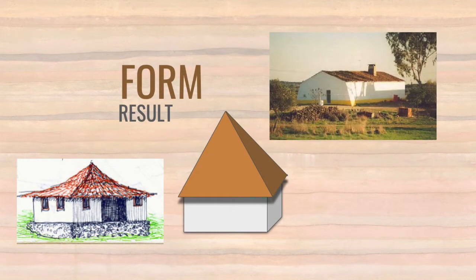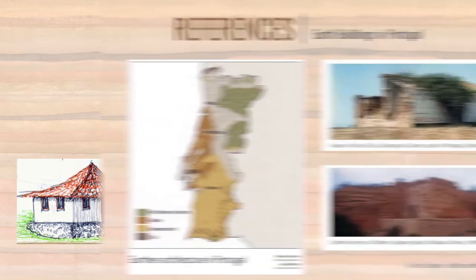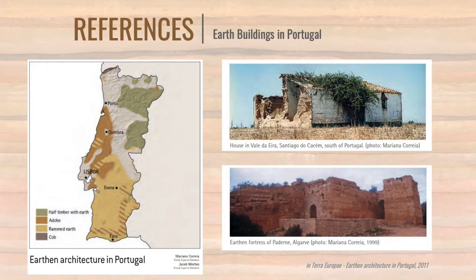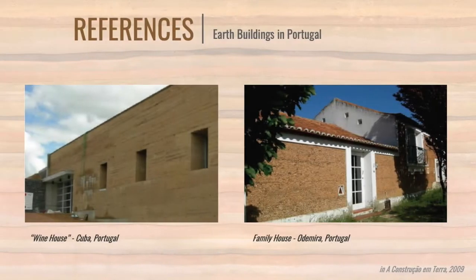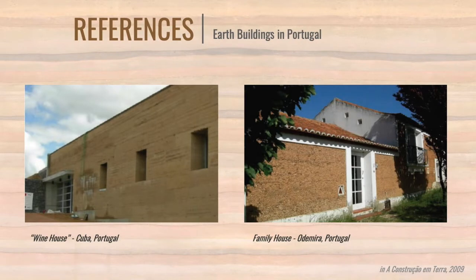The result is an object of simple geometries, which alludes to the typical round earth houses of the Alentejo region, and which inspired us in the choice of our earth construction method. Some of the references we can see here are the house in Val da Aira in Santiago do Caçã, also in Alentejo, and the earthen fortress of Poderna, also in the south of Portugal, in the Algarve. Here on the left, we can also see a map that demonstrates the areas of earth construction in Portugal. Another two conceptual references were a wine house in Alentejo, Cuba, and a family house, also in the Alentejo, in Ordemira.